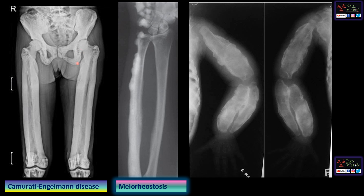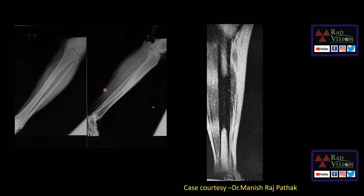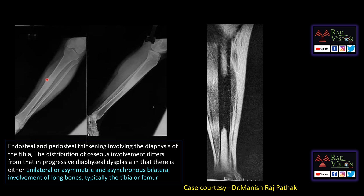These are the differentiating points between progressive diaphyseal dysplasia and melorheostosis. Another differential is Caffey's disease or infantile cortical hyperostosis, seen in infants, showing diffuse periosteal thickening, periosteal elevation, remodeling, and expansion of long bones, which can also mimic progressive diaphyseal dysplasia.